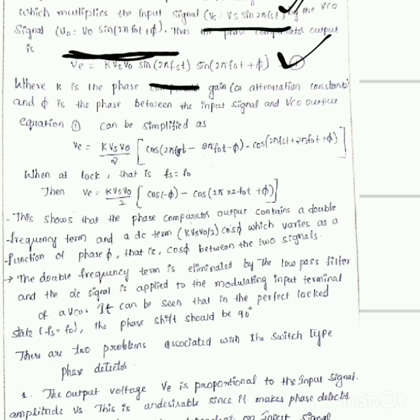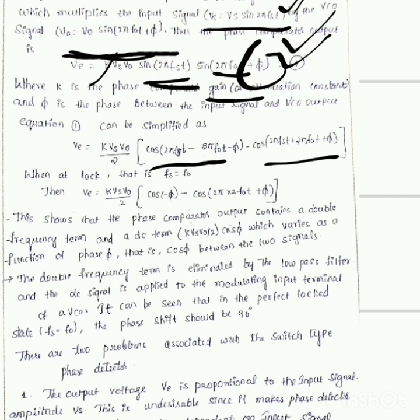As a product, the output gives K·Vs·sin(2πFst)·sin(2πF0t + π), where K is the phase comparator gain, a constant value. The phase difference between input and output is π. Using the trigonometric identity sin(A)·sin(B) = ½[cos(A−B) − cos(A+B)], where A = 2πFst and B = 2πF0t + π, we apply this formula to expand the product.